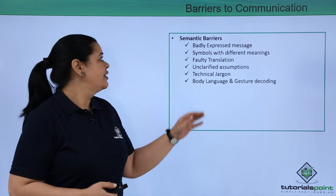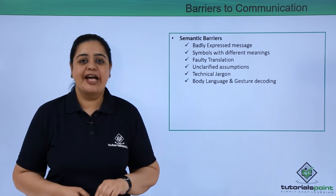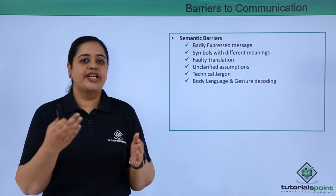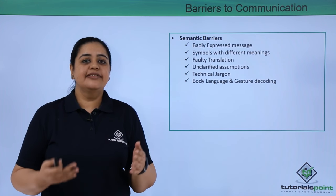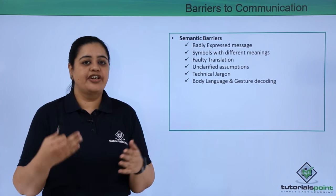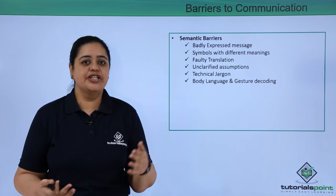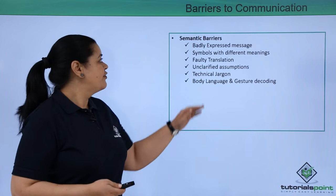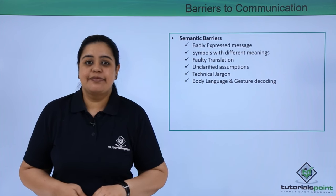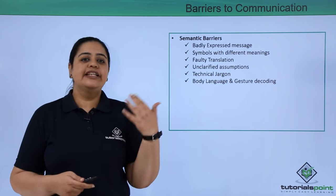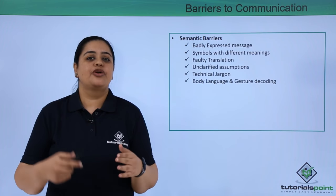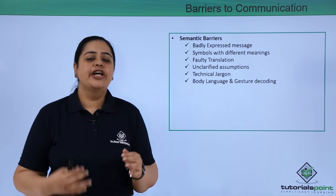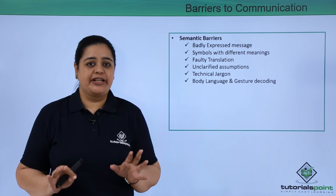The first one is the semantic barrier. This is a kind of linguistic barrier which happens wherein words are taken in a different manner — whatever has been communicated, the meaning is being taken in a totally different way. For example, a badly expressed message: although the intention of the manager was not to write a rude email, he ended up writing a very rude email without realizing it.